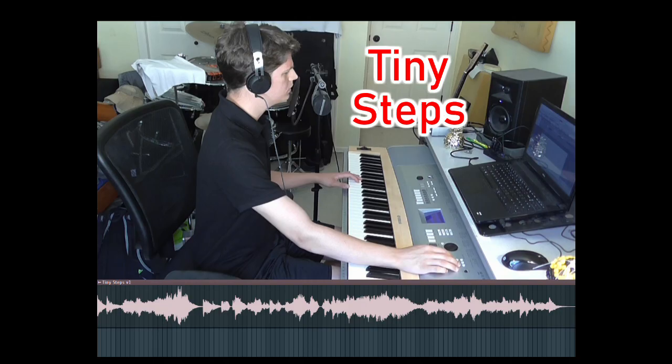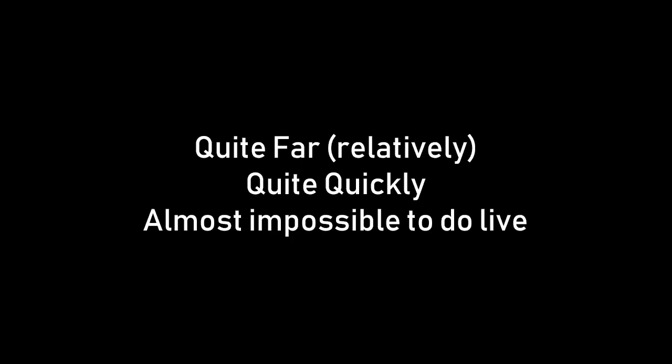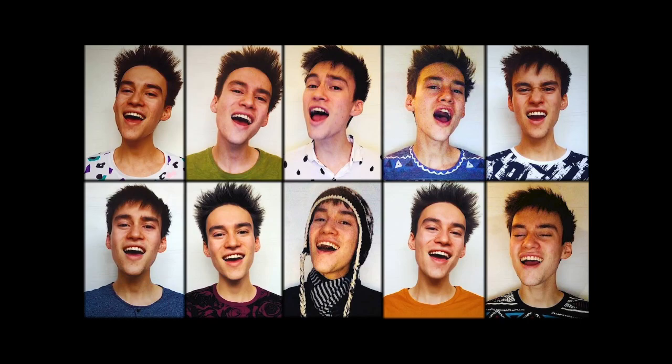In 'Tiny Steps,' my microtonal modulations were all separated from each other, but you can also connect them by switching pivots. This allows you to modulate quite far quite quickly, but it's almost impossible to do live. If you know Jacob Collier's 'In the Bleak Midwinter,' this is how he did microtonal modulation there. So let's check it out — let's start with a G major chord and see where we can go.